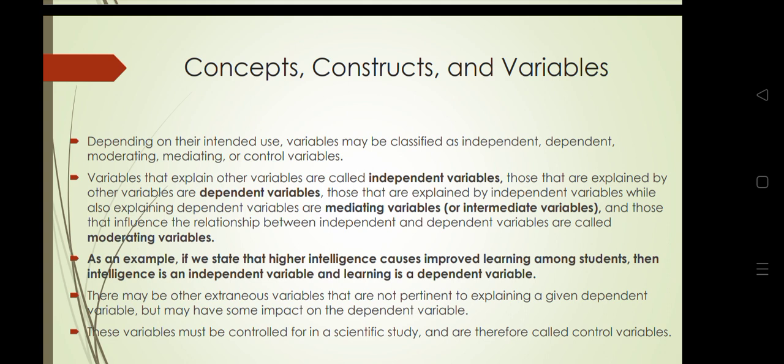Through this example we can understand dependent and independent variables. Variables that explain other variables are independent variables — they are not affected by other variables but can explain other variables. Those that are explained by other variables are dependent variables. There are also some intermediate variables, such as mediating variables.